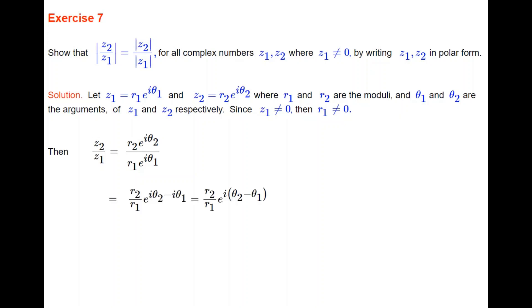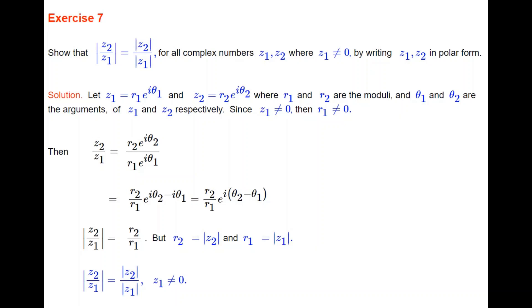The right-hand side gives us (R2/R1)·e^(i(θ₂ − θ₁)), because when you divide terms in index form with the same base you subtract the indices. The modulus of the right-hand side is just the number at the front, R2/R1. But R2 is the modulus of Z₂ and R1 is the modulus of Z₁, so the modulus of Z₂/Z₁ equals the modulus of Z₂ over the modulus of Z₁ (for Z₁ ≠ 0). Writing complex numbers in polar form makes the proof very easy.